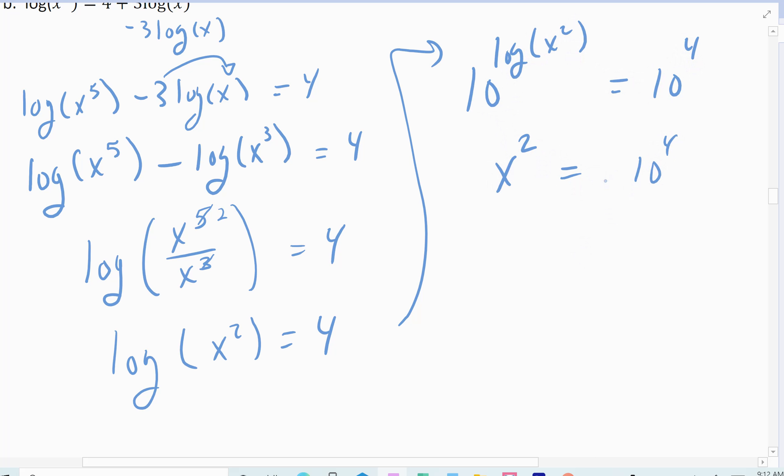And then I'm going to solve my x squared by taking the square root. Remember when I take the square root, it's plus or minus the square root of 10 to the 4th. So x equals plus or minus 100. So there are two answers, x equals 100, x equals negative 100.